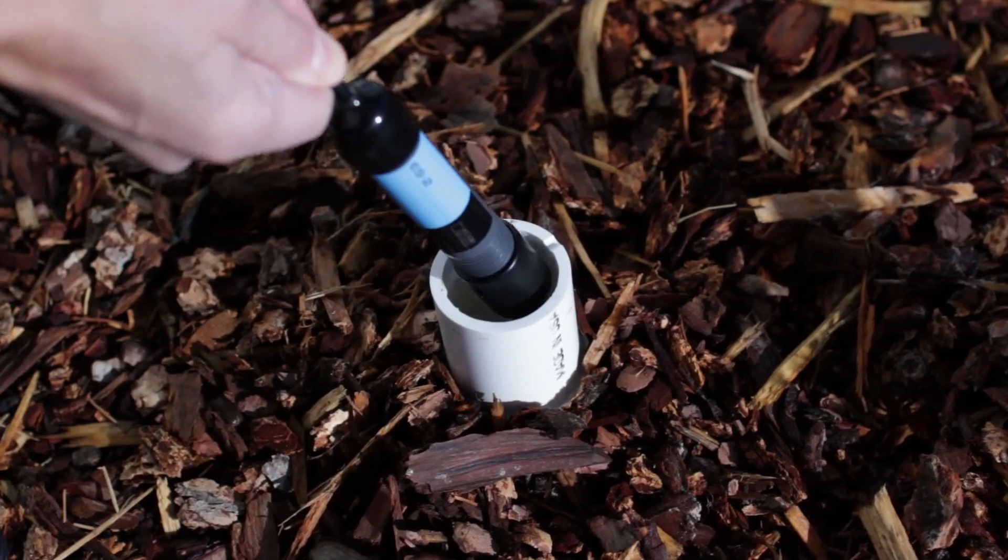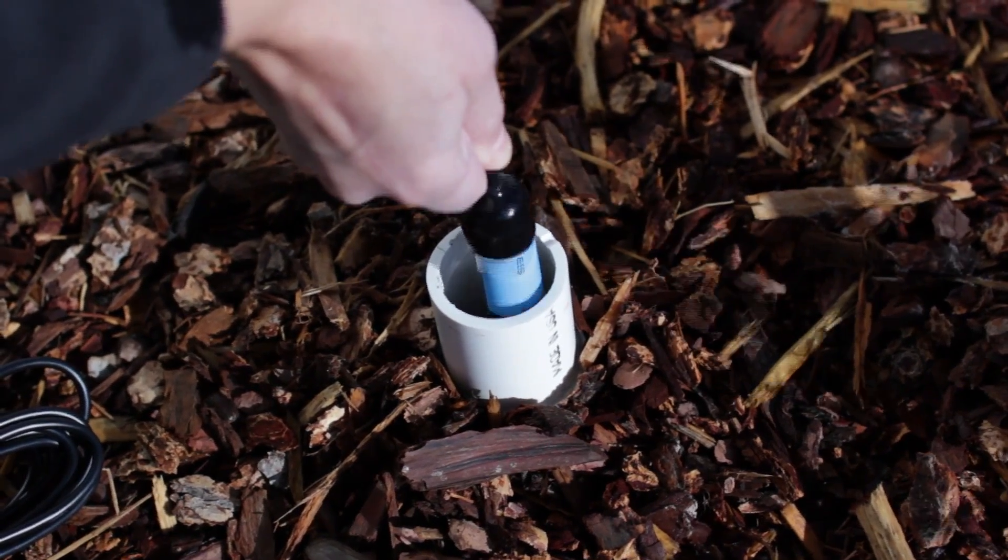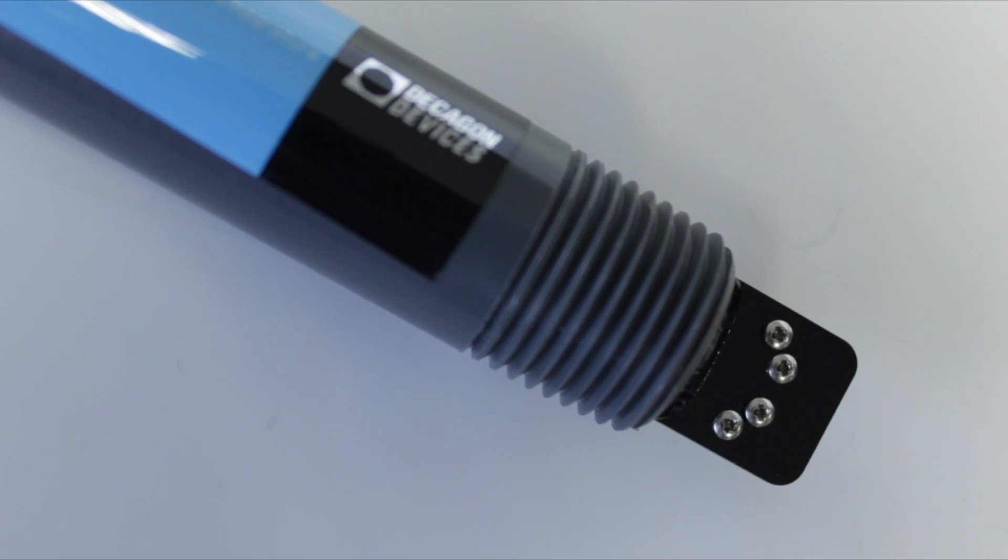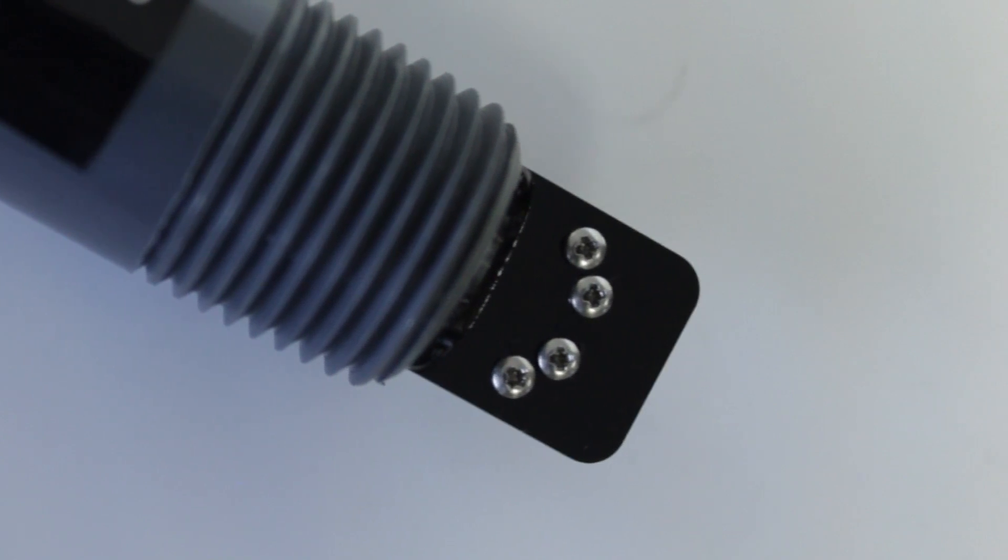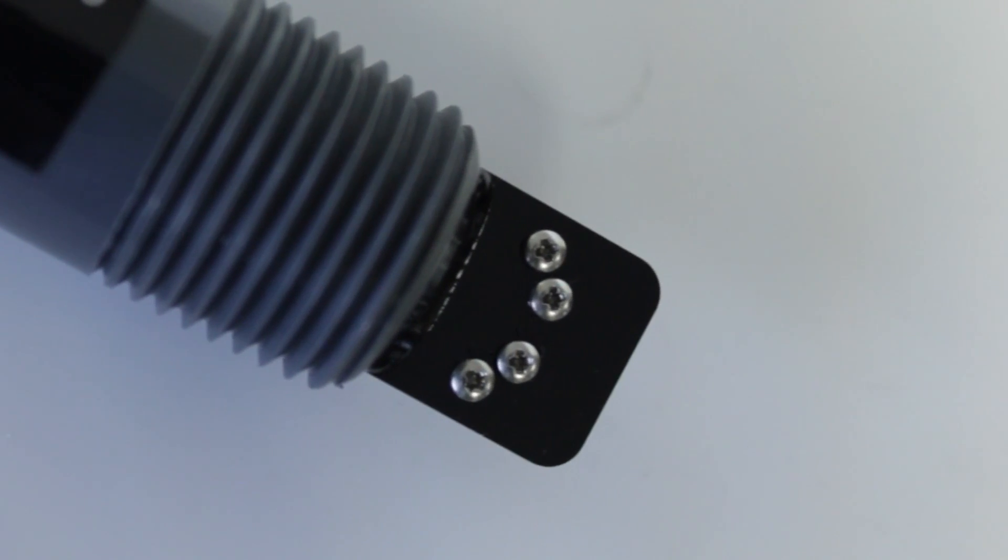It has a 22 millimeter diameter, so it can fit pretty much wherever you need it to go. Instead of just two-point sensing EC, we now use a four-point winter array, so you can measure all the way up to 120 deci-siemens per meter.